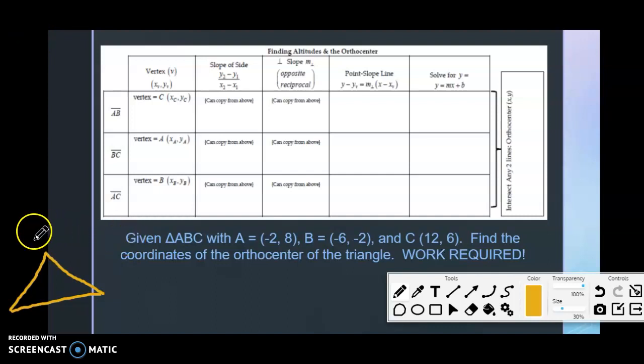Now this is just the triangle from the previous slide. So we had A was (-2, 8) and I would just draw an xy plane and just kind of estimate here. C was (12, 6), okay, and the B over here was (-6, -2). Okay, that's your B value.